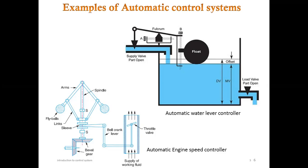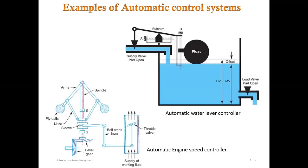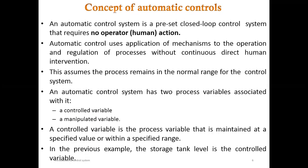The automatic water level controller is a complete automatic system with feedback — no person is deputed to open the load valve, close the supply valve, or pull up the float. An automatic control system is a preset closed loop control system that requires no human action. Closed loop means the system with feedback. Automatic control applies mechanisms to the operation and regulation of a process without continuous and direct human intervention.